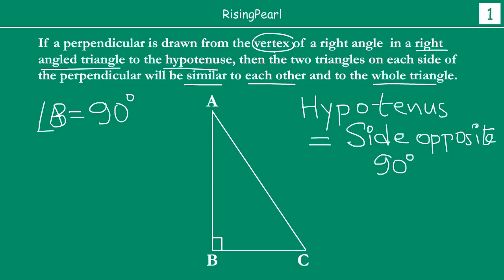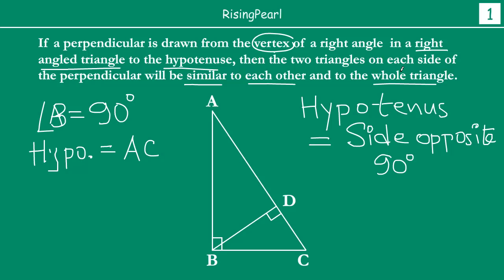So from vertex B, if we drop a perpendicular BD onto the hypotenuse AC, such that angle BDC is 90 degrees. Hypotenuse is AC because B is 90 degrees. We draw BD such that BDC is 90 degrees. Then the theorem tells us about the two triangles on each side of the perpendicular.